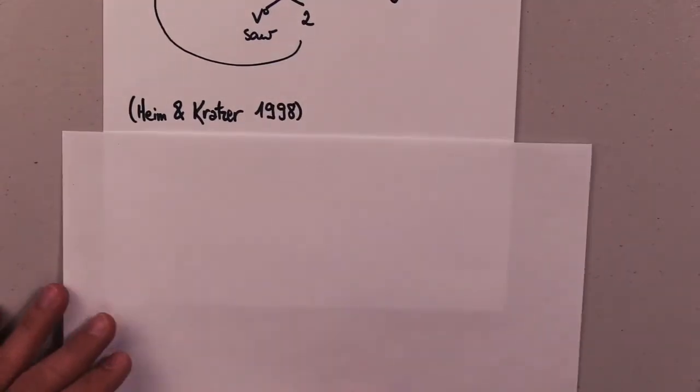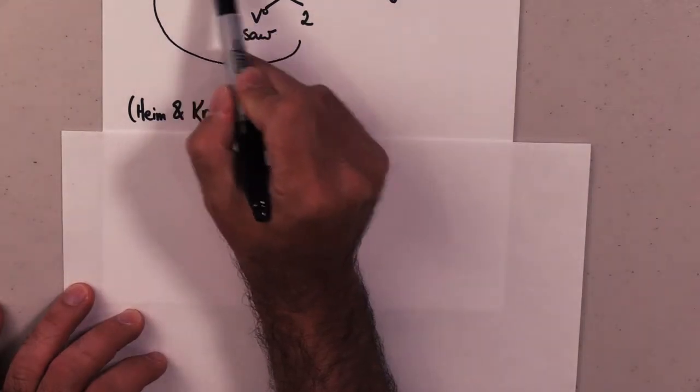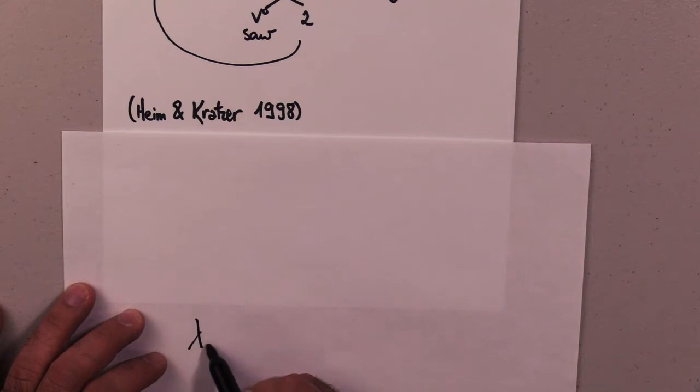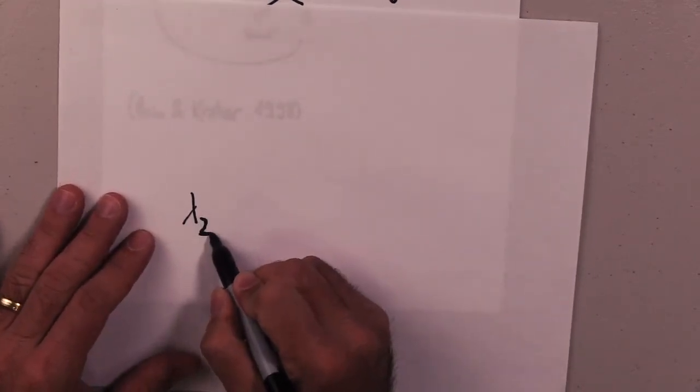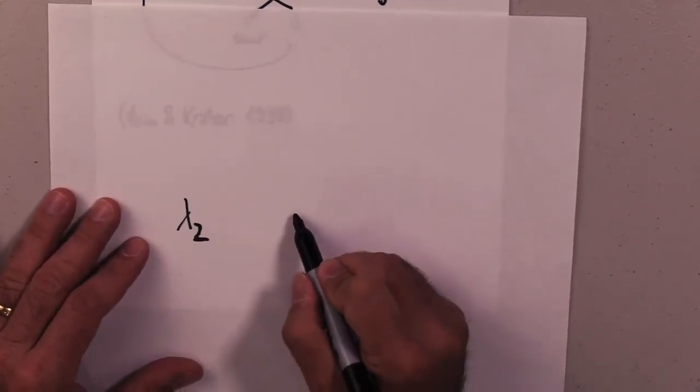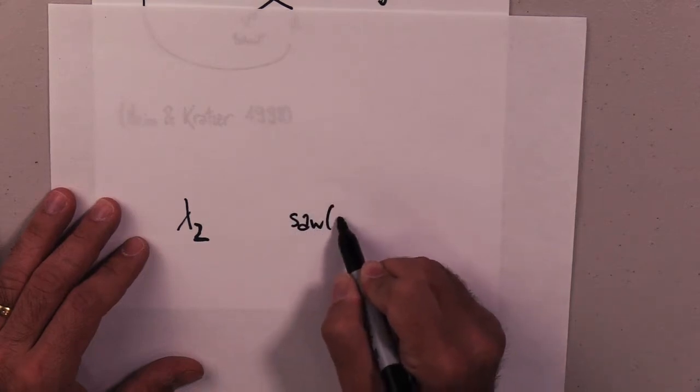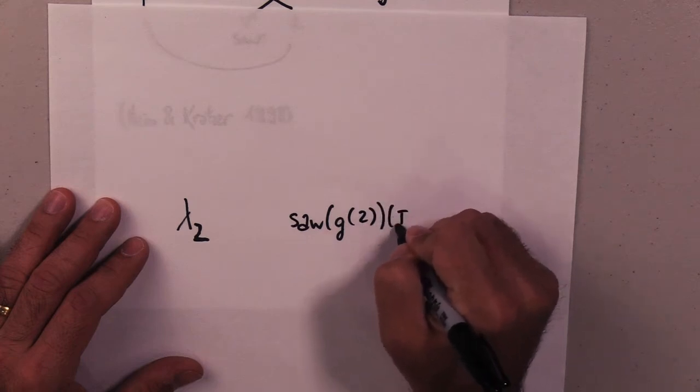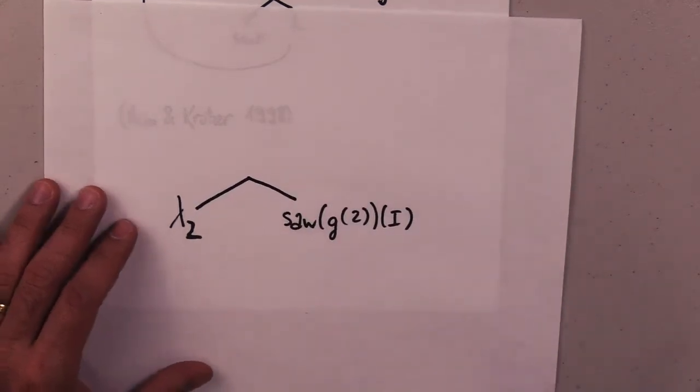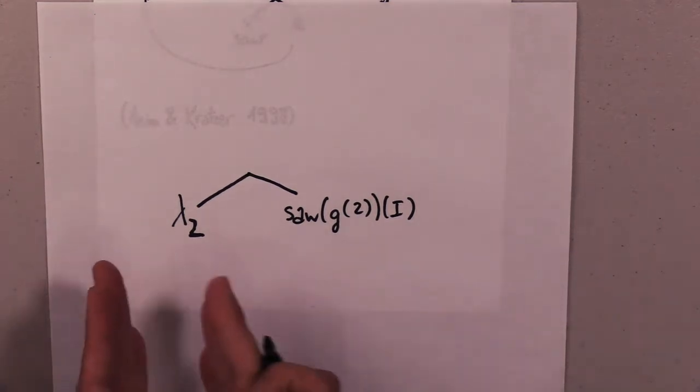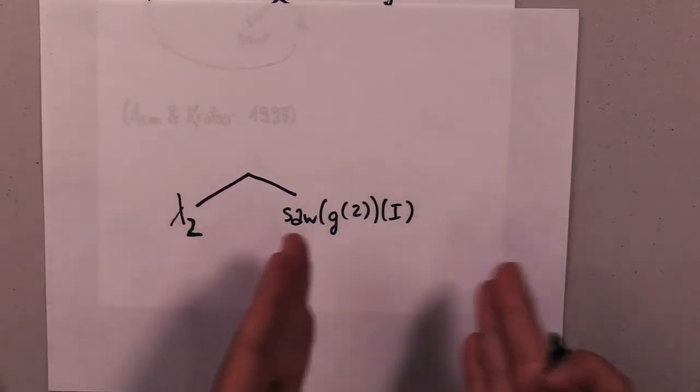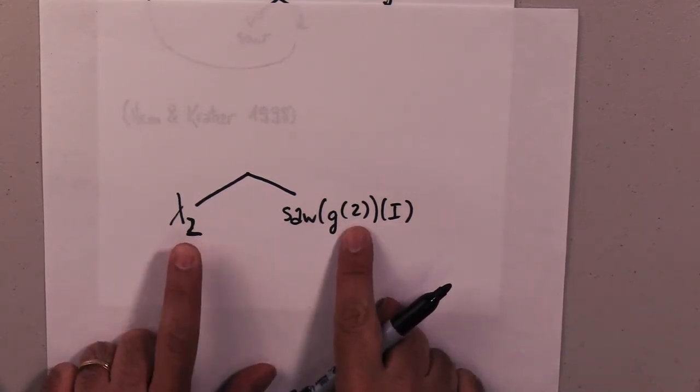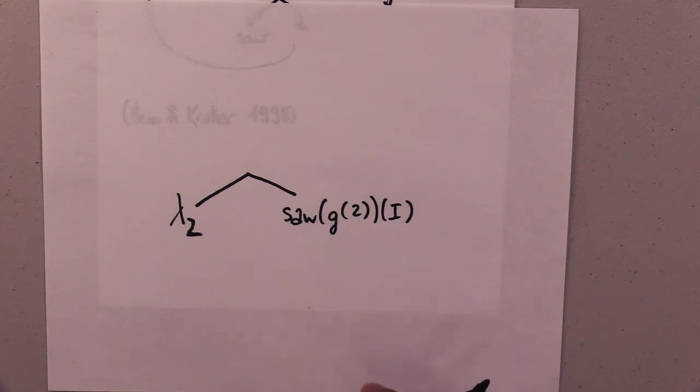We look at this bit right here. We have lambda 2, lambda sub 2, and we have saw G of 2 and I. When we get a structure like this, this is when we use predicate abstraction. There's an index that will serve as a binder, and there is an expression that has the same index in it. That's a key bit, otherwise we're abstracting in vain.